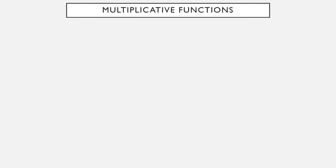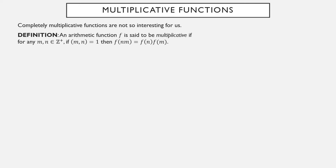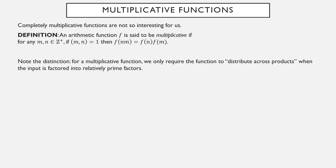Completely multiplicative functions are not the most interesting for our purposes. What we are more interested in is something called a multiplicative function. Given any two elements m and n of the domain, if those two numbers are relatively prime, then you can distribute the function. If the two numbers are not relatively prime, maybe you can, maybe you can't — you just don't know. The definition of multiplicative, as opposed to completely multiplicative, adds this extra hypothesis: if the two input numbers are relatively prime, then you can do this distribution.